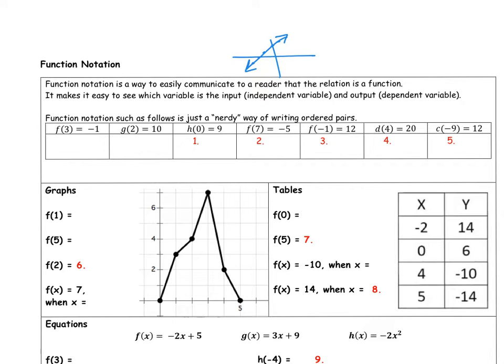When we have f of 3 equals negative 1, this is the point 3, negative 1, meaning when x is 3, y is negative 1. g of 2 equals 10 is 2, 10. So that's how you do that first section.